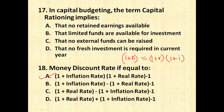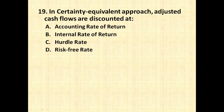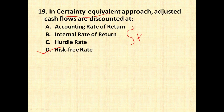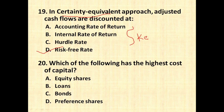The next question is: in the certainty equivalent (CE) approach, adjusted cash flows are discounted at what rate? The options are risk-free rate of return, accounting rate of return, internal rate of return, or hurdle rate. In the certainty equivalent approach, adjusted cash flows are always discounted at the risk-free rate of return, that is RF. So the right answer is risk-free rate of return.